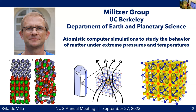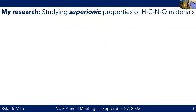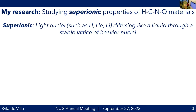My research is focused on studying super ionic properties of what we call HCNO materials — materials exclusively composed of the elements hydrogen, carbon, nitrogen, and oxygen. To define super ionic: a material is super ionic if it has a stable structure of heavy elements with light elements such as hydrogen, helium, lithium, or sodium diffusing throughout like a liquid.